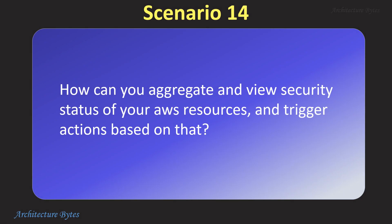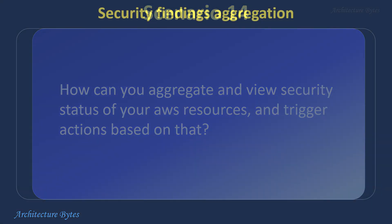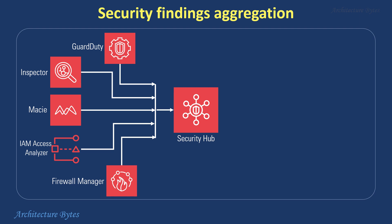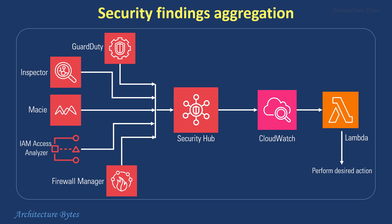How can you aggregate and view the security status of your AWS resources and trigger actions based on that? We would use AWS Security Hub. It provides a central dashboard for security findings, collecting findings from built-in AWS security services like GuardDuty and Inspector, partner security tools, and your own custom integrations. The findings can be sent to CloudWatch Events where event rules could be configured to trigger actions.